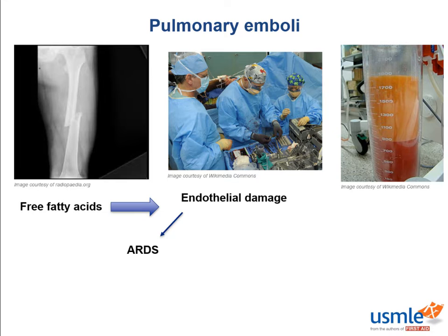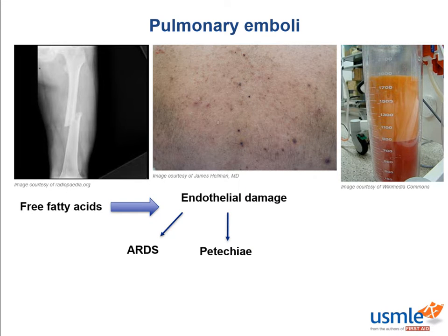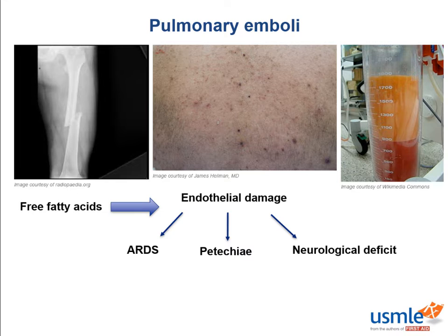When free fatty acids damage the endothelium of skin capillaries, it results in petechiae. When it damages the endothelium of brain vessels, it causes neurological abnormalities like cognitive deficit. So we've created a triad of hypoxemia, neurological abnormalities, and a petechial rash. Other findings include anemia, thrombocytopenia, and renal failure — the drop in platelets and hemoglobin occurs because the fat molecules act like a sticky flytrap towards platelets and red blood cells.